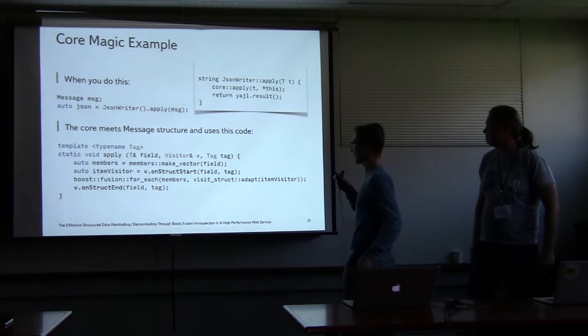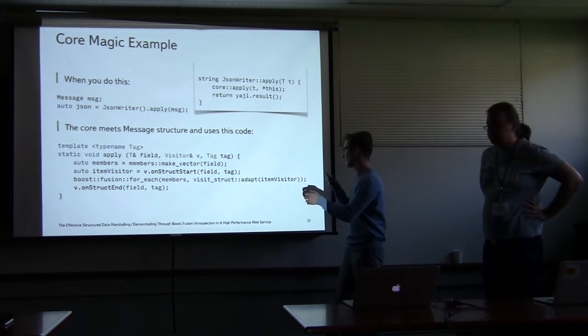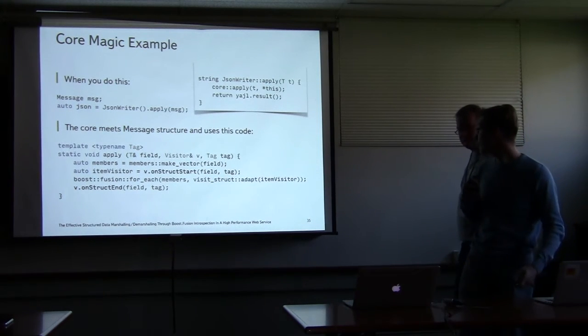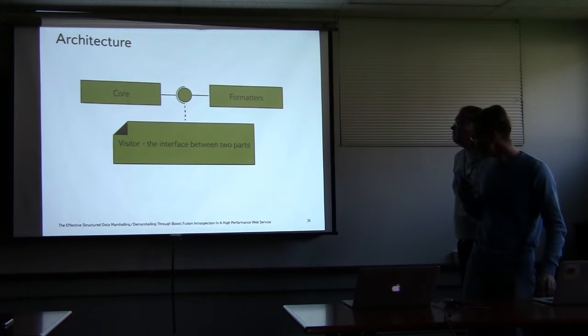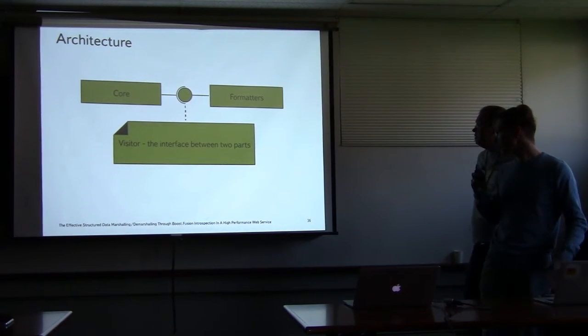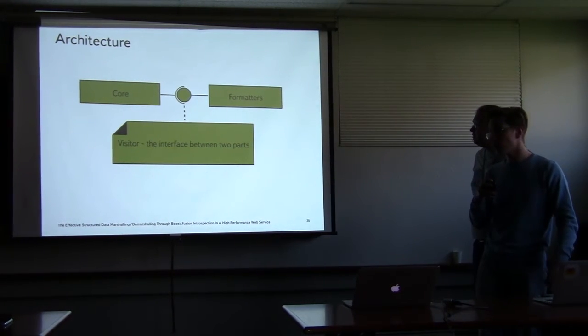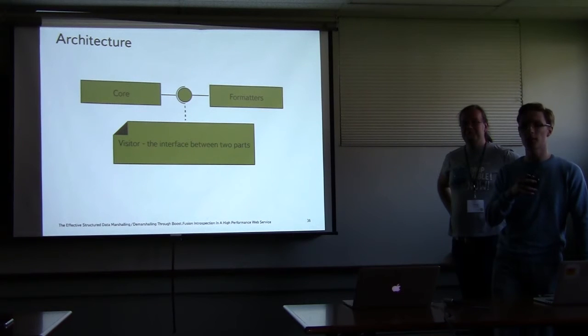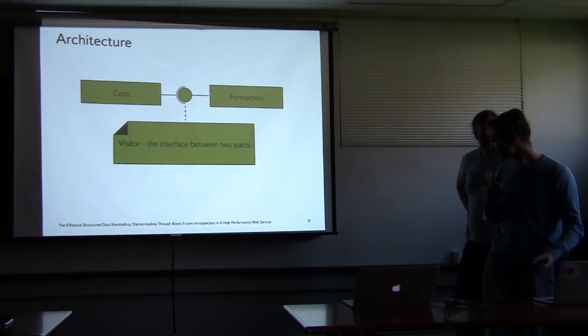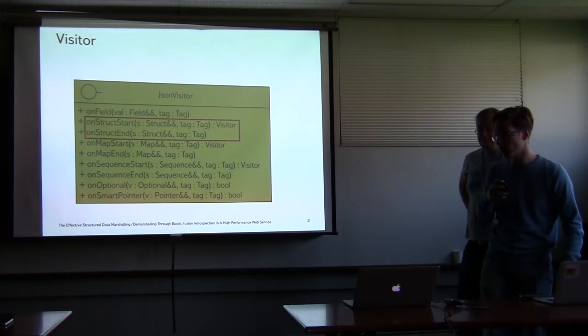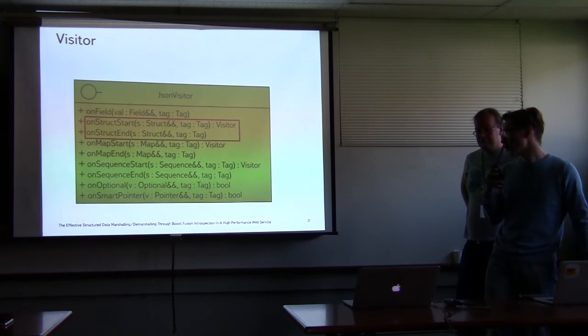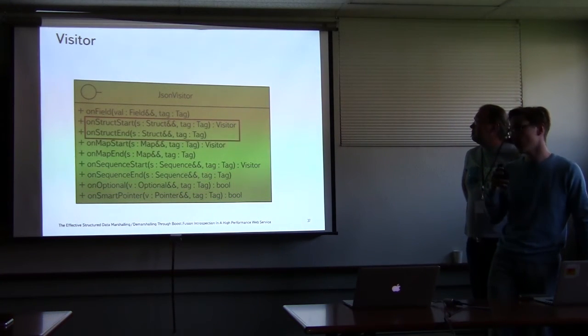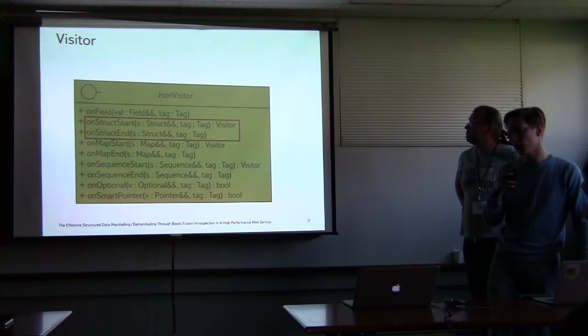Essentially what's going on is we'd like to open curly braces for JSON here, process each field - we'll get to that later. Who is familiar with the visitor design pattern? Okay, pretty much everyone. Here is how a visitor might look. It's a bunch of methods. You don't have to implement all of them, though you can. They're covering a bunch of cases - what to do when you are at the start of structure, end of structure, some special types like smart pointers, optional values, containers, and things like that.